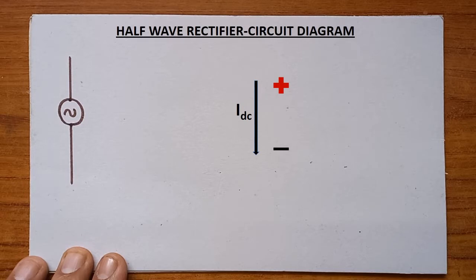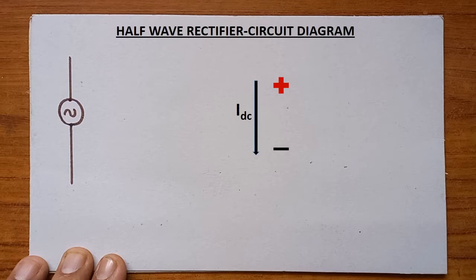Now I am going to teach you how to draw the circuit diagram of a half wave rectifier. In the case of any rectifier, alternating current and alternating voltage is to be converted into direct current and direct voltage — that is, AC is to be converted into DC.